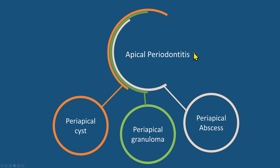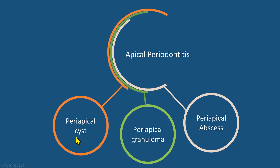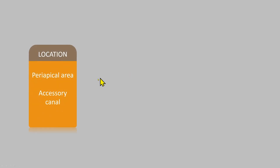Apical periodontitis represents three types of pathology: it can be a periapical abscess, a periapical granuloma, or a periapical cyst. Based on radiographic findings, it's not possible to differentiate these three conditions, so the term to use is 'apical periodontitis,' which covers all three. The radiographic features of apical periodontitis are based on location.